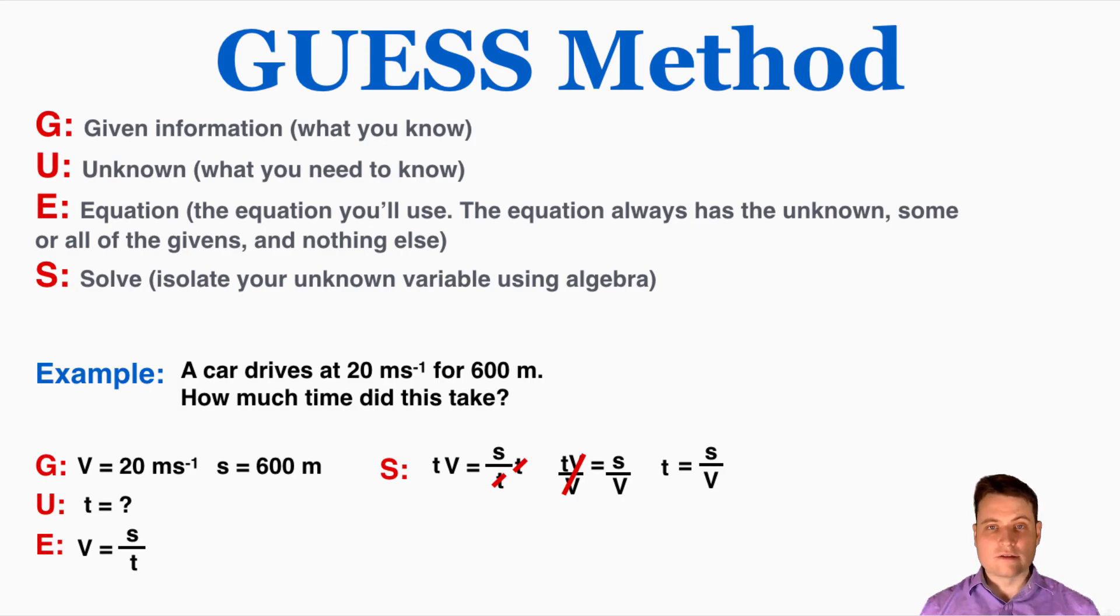This will always be true for constant velocity in the same situations where velocity is equal to displacement over time is true. So we now have our equation and we're ready to substitute our numbers.